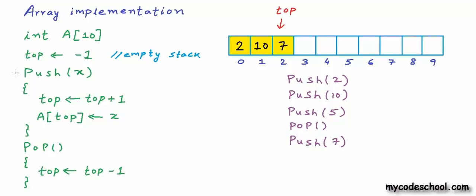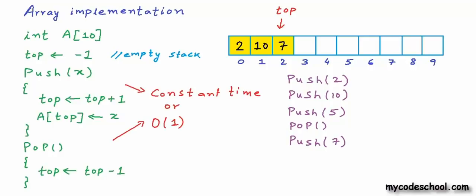These two functions, push and pop, take constant time. They involve simple operations whose execution time does not depend on the size of the stack. When we defined the stack ADT, we said all operations must take constant time — O(1). In our array-based implementation, both push and pop operations are O(1).